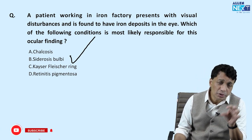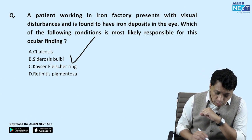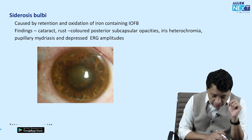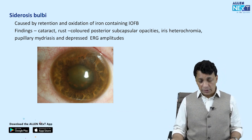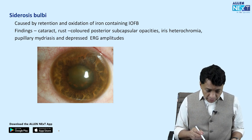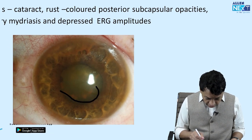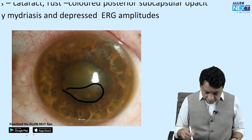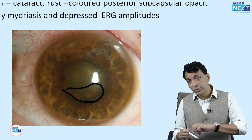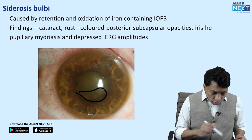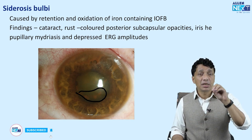Siderosis comes from the word hemosiderin — that's the iron deposition. The clinical findings of siderosis bulbi include a rust-colored posterior subcapsular cataract, iris heterochromia where the affected iris becomes darker due to iron deposits, and a pupil in mid-dilation — which is particularly dangerous because it means the retina is getting damaged and visual recovery chances are poor.